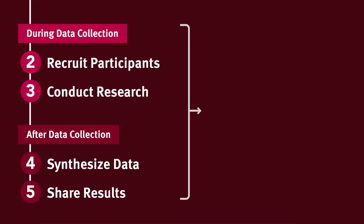Our next three best practices are relevant during and after data collection. First, let's talk about how we maintain participant anonymity. Anonymity should be preserved while taking notes, while cleaning data and preparing it for storage, or while disseminating results. For example, don't use participant names or any other key identifiers like social security number or date of birth in notes and file names.